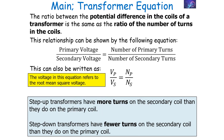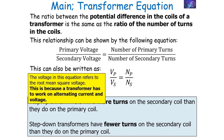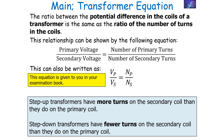Please note that in this equation, because a transformer works with an alternating power supply — alternating voltage and alternating current — to get the true value you must use the root mean square voltage when determining the values. This equation is given to you in your examination booklet; however, you must be able to use it.